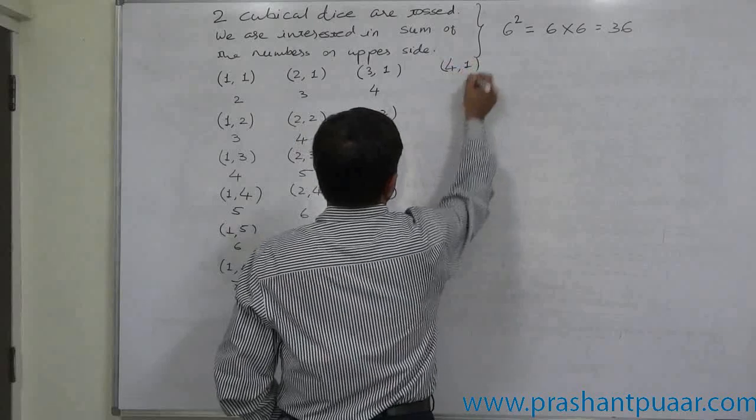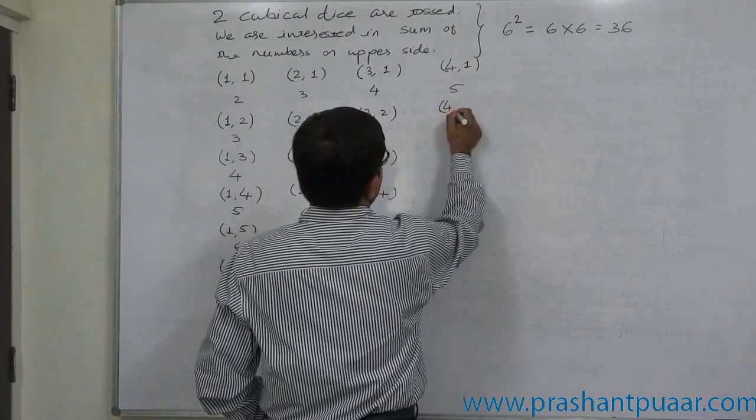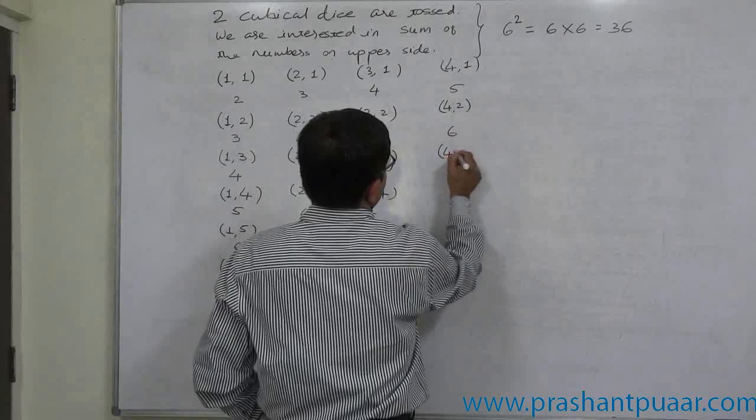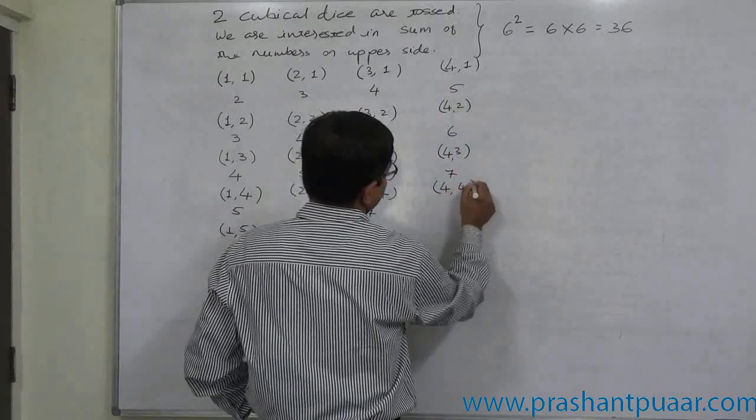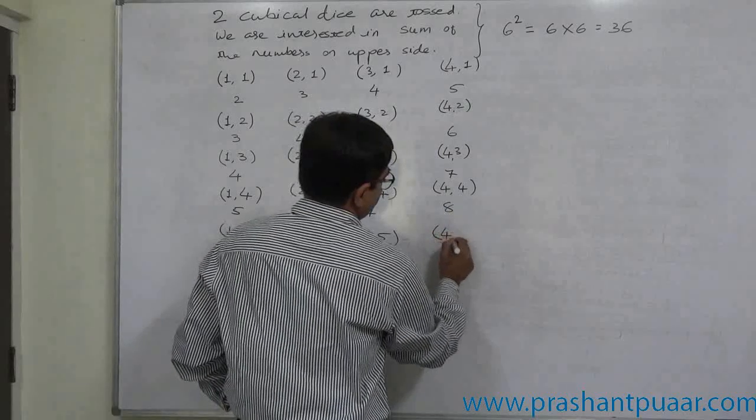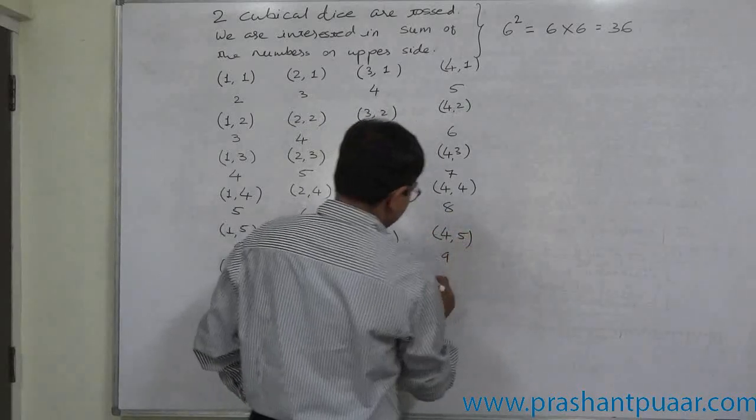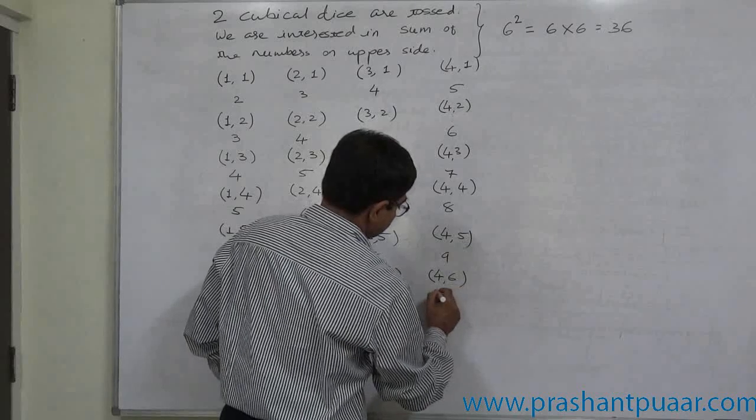Four, one: five. Four, two: six. Four, three: seven. Four, four: eight. Four, five: nine. Four, six: ten.